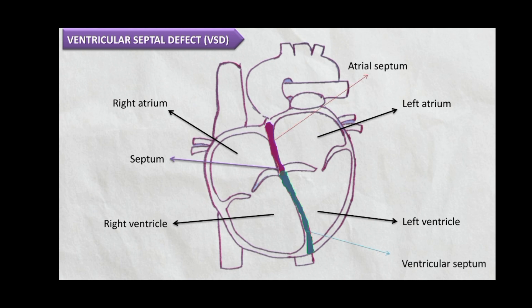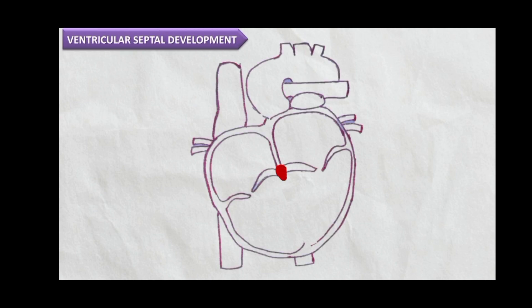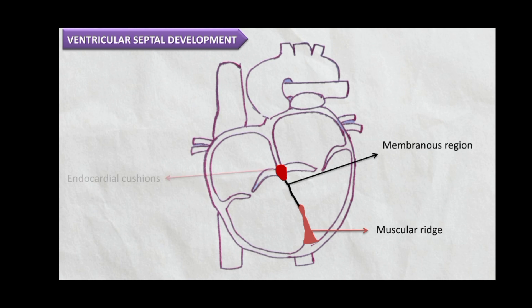A VSD, or ventricular septal defect, is a gap or opening in the ventricular septum after development. The septum is formed when a muscular ridge of tissue grows upward from the apex and fuses with a thinner membranous region coming down from the endocardial cushions, creating two separate chambers — the left and the right ventricles. However, if they don't fuse, this leaves a gap in the ventricular septum called the VSD.